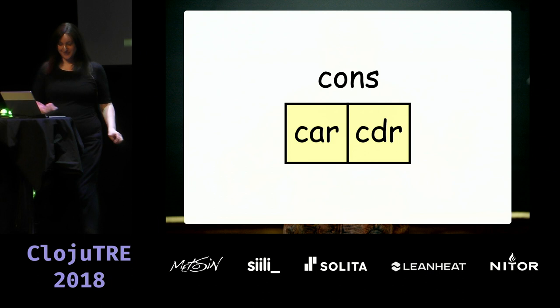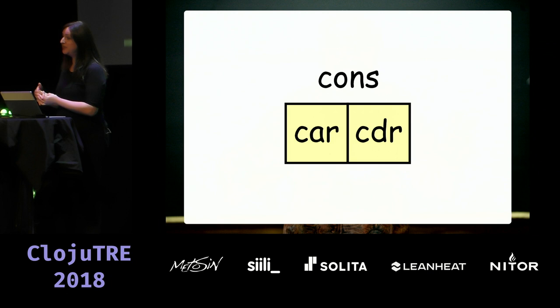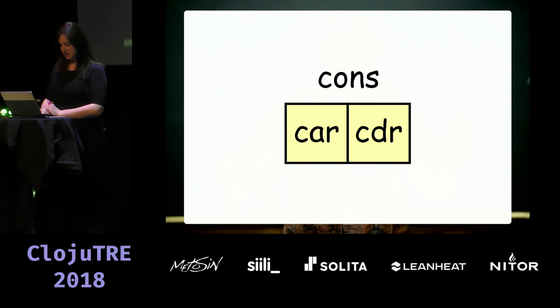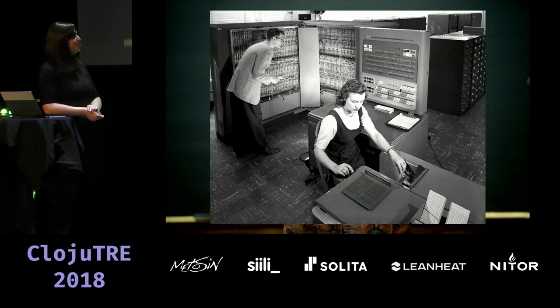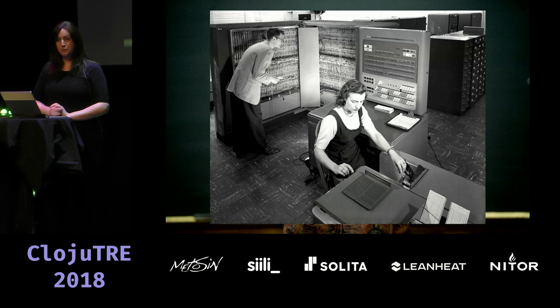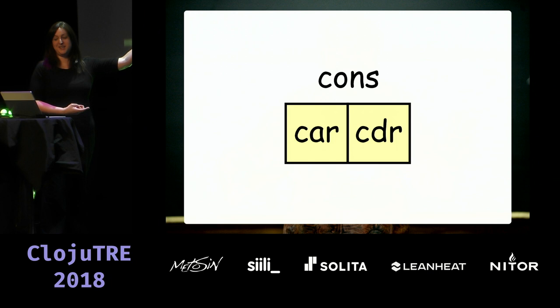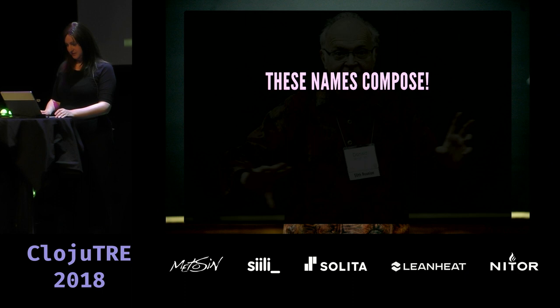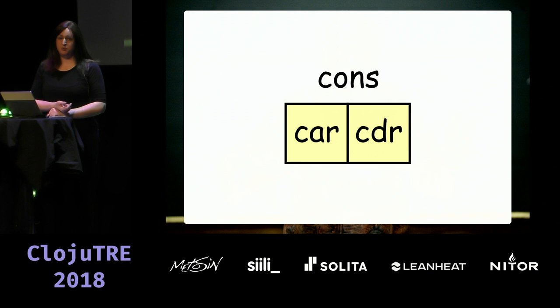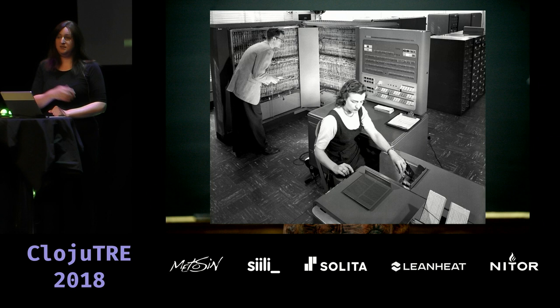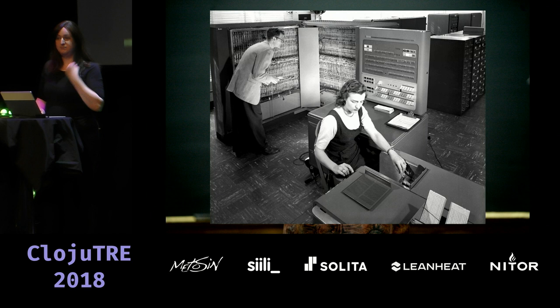The cons cell consists of two elements traditionally called the car and the cdr — pronounced 'car' and 'cutter'. The reason for these names: this is the IBM 704 computer from the late 1950s, the first computer on which a Lisp interpreter was implemented. The names mean 'contents of address register' and 'contents of decrement register' — simply registers on the CPU. These names stuck with us; they're still in languages like Scheme today. Clojure decided to rename them, for some reason I cannot fathom.